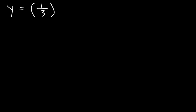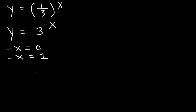Here's the next example: graph (1/3)^x. When you have a fraction like this, the best thing to do is rewrite it. If we move the 3 to the top, positive x will change to negative x, giving us 3^(-x). Now let's set negative x equal to two things: zero and one. Solving for x gives us x equals zero and x equals negative one — those are the values we want to plug in.